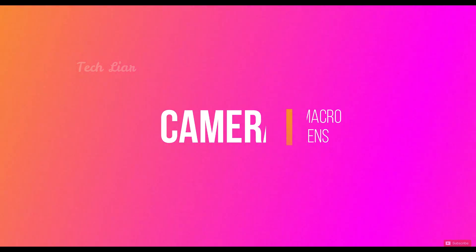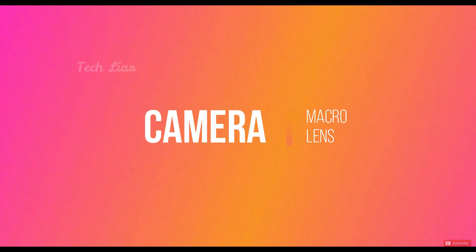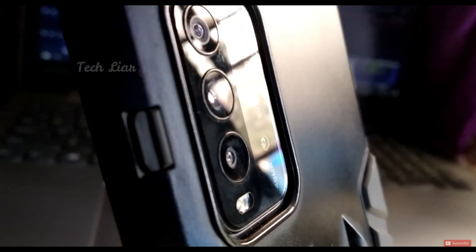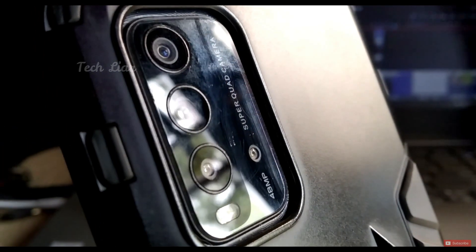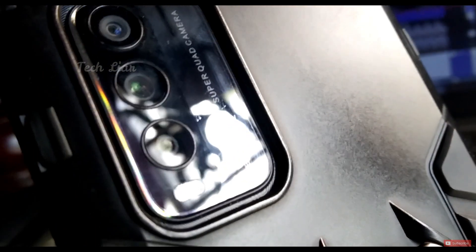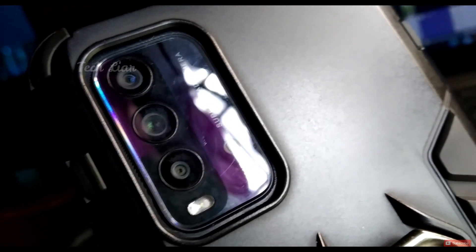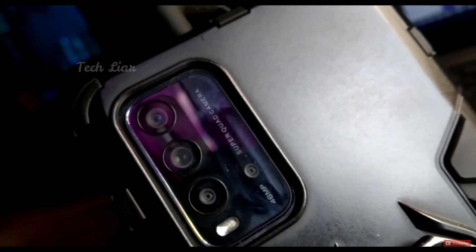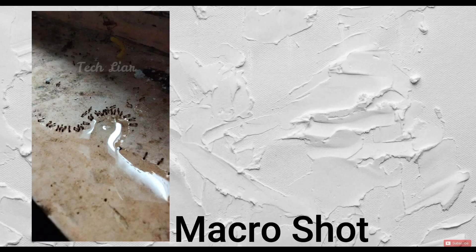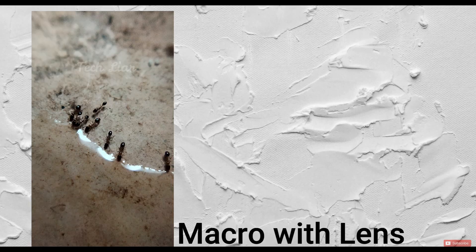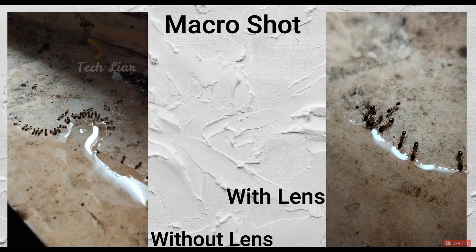Let's look at the macro lens. If you want to do professional photography, we can use the macro lens. We can add a little bit of zoom with the lens. If you want a macro shot, you can use an external lens or the built-in normal macro lens.